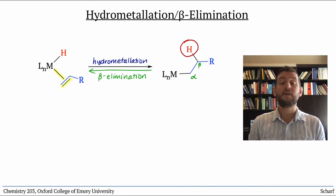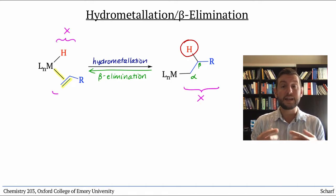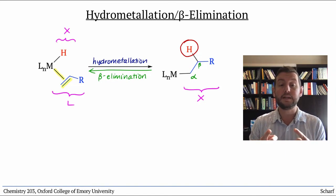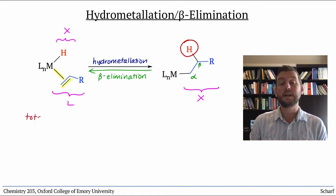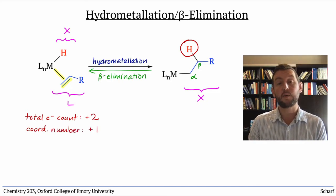Because this process involves a single X-type ligand becoming a new X-type ligand and an L-type ligand, it causes the total electron count of the metal to go up by 2 and the coordination number to increase by 1.